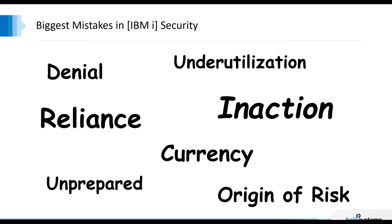I did a webinar in 2018 talking about some of the biggest mistakes that I see in IBM i Security. I summarized that entire slide deck into one slide to talk about the things I often see as mistakes organizations make — be it denial that they are at risk, inaction that management finds themselves stalled in, underutilization of tools that exist in the IBM i operating system, and not being prepared. Go out to helpsystems.com and you'll find the webinar available for on-demand playback.